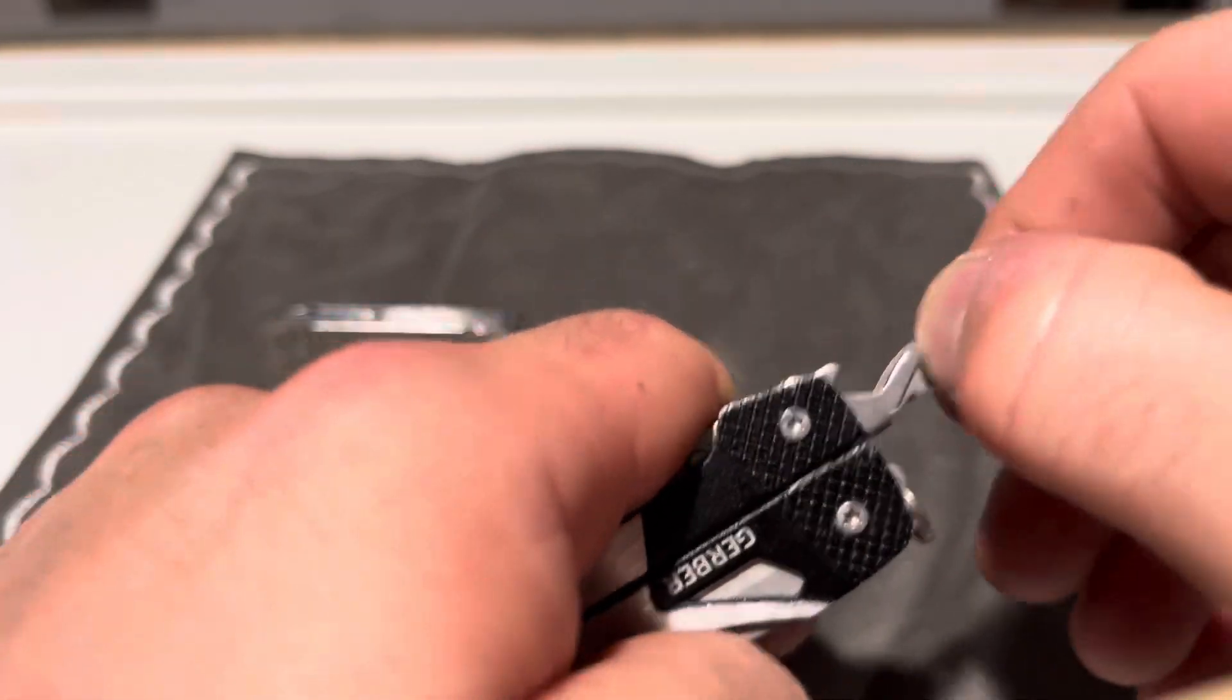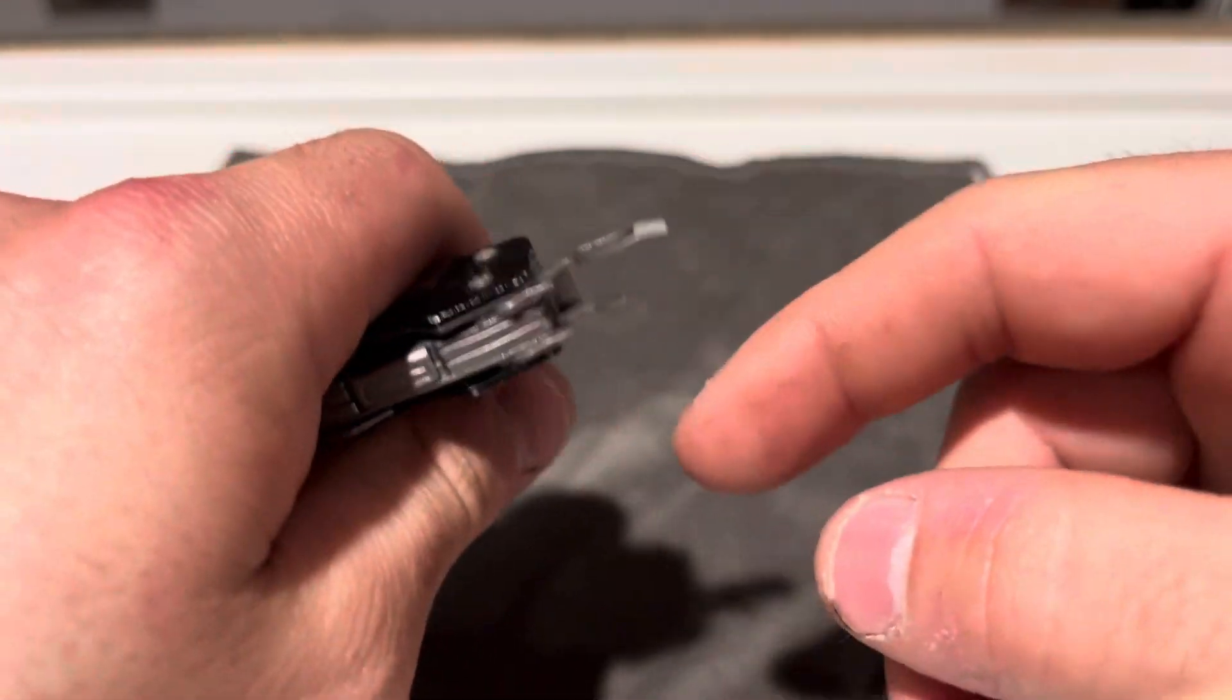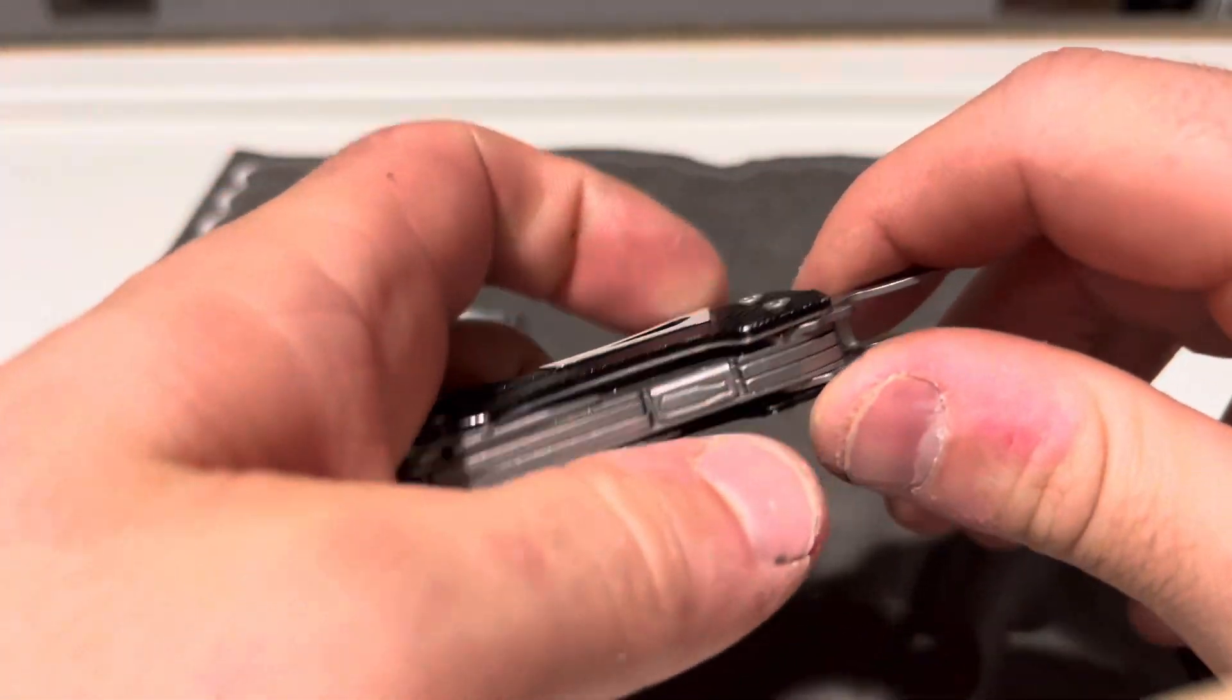Then you come around to this side and you do have a very nice bottle opener. It peels the tops right off. Not a problem.